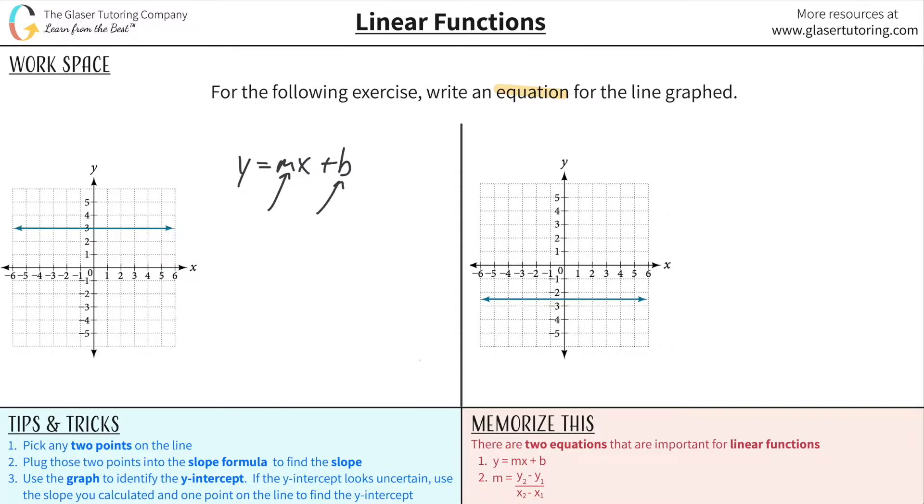So when they say write an equation for the line, they really want to know this equation when m and b are known. Meaning y is equal to, I don't know, 4x minus 10. Right? I mean, this would be a valid equation. We know the slope, we know the y-intercept, very good.